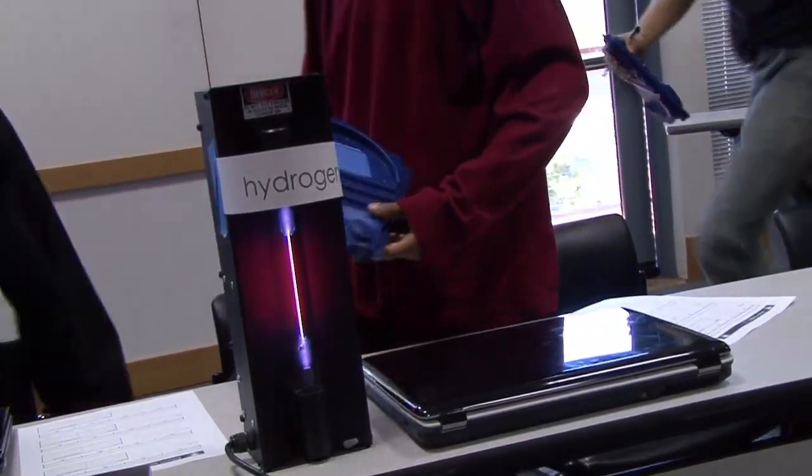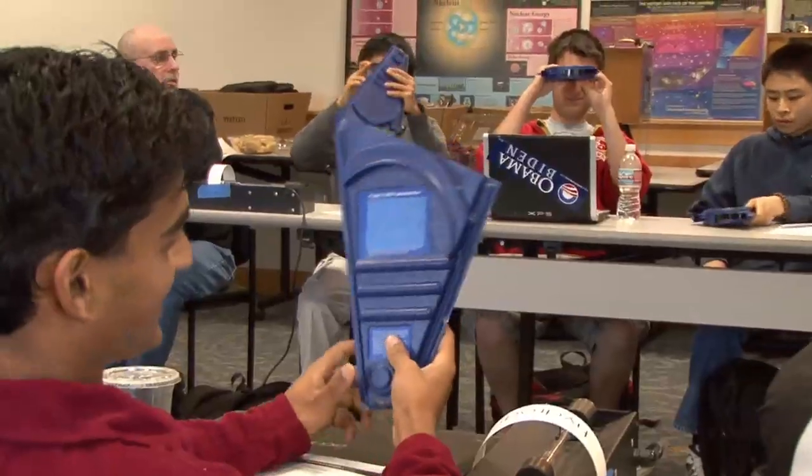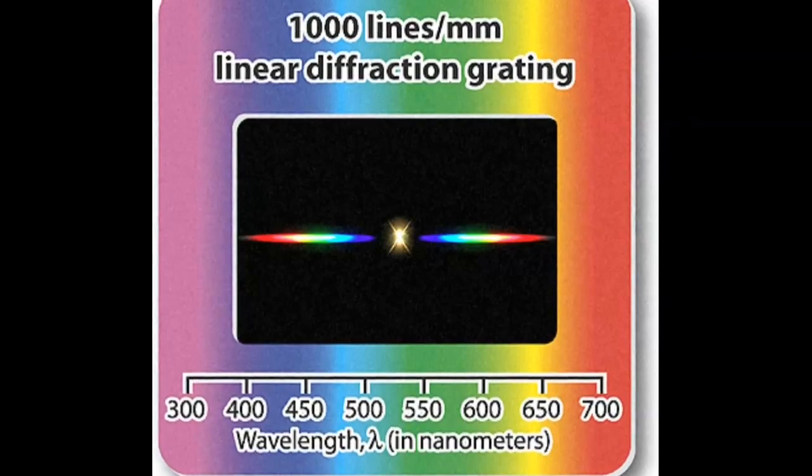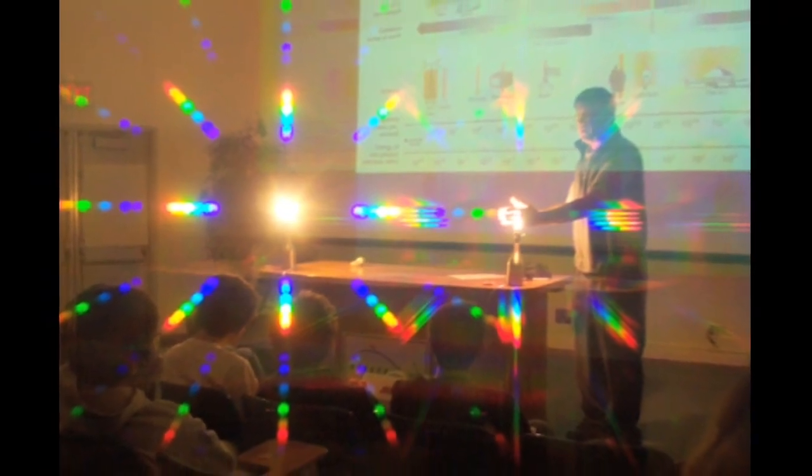To detect the wavelengths coming off of each element, I'm going to hand out these spectroscopes. Now you guys saw earlier today, looking through those diffraction gratings, your original light source was in the middle, and off to either side you saw what? The spectra, the rainbows, right? Going off to either side.